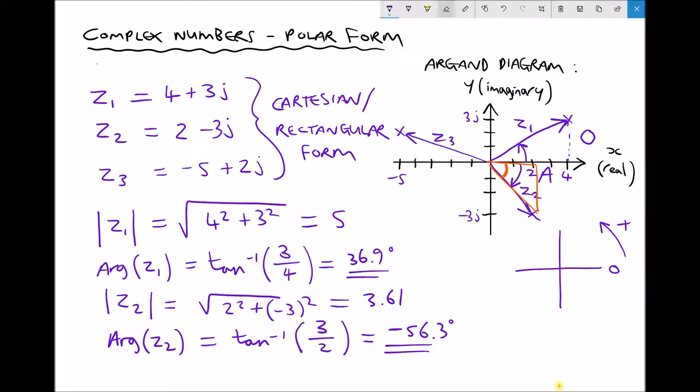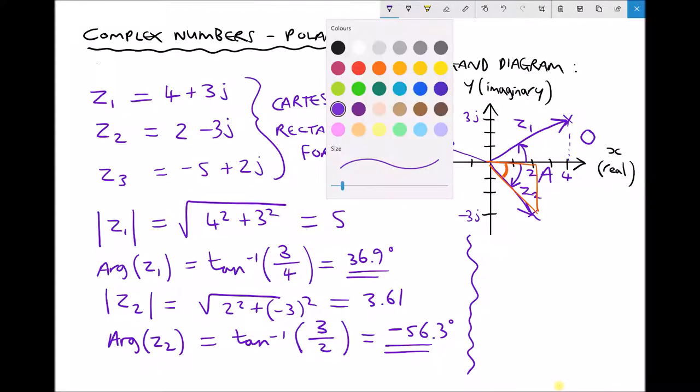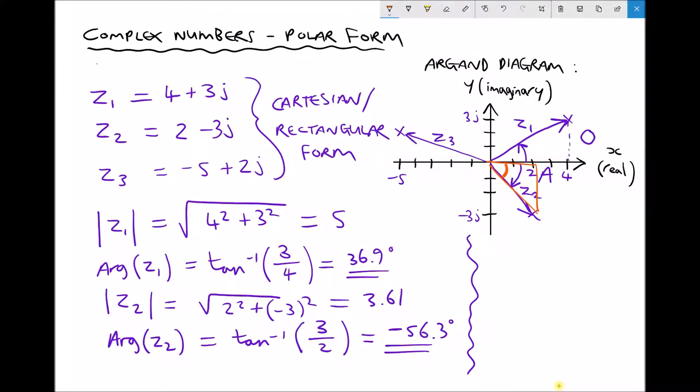Let's take a look at our final example. The important thing to remember is the convention because we can see here that our Z3 is pointing up and to the left. So our angle this time is going to be this angle here. That's going to be our argument of Z3. What we're going to do is find the angle in here, I'll just call it theta for now, and once we've found theta we can determine the argument.